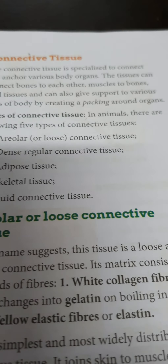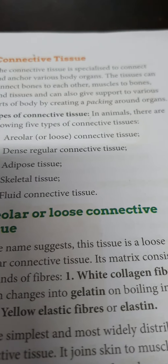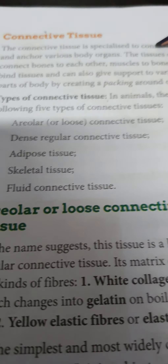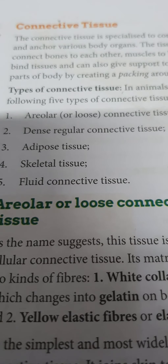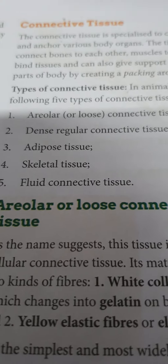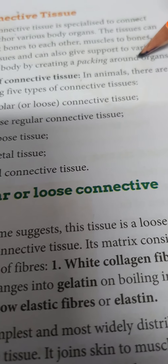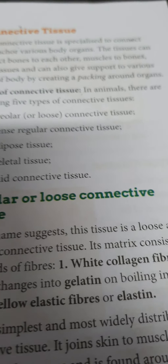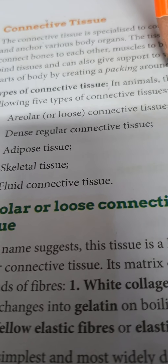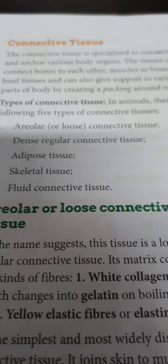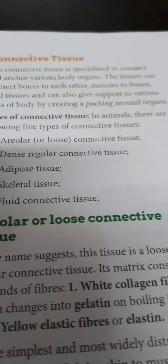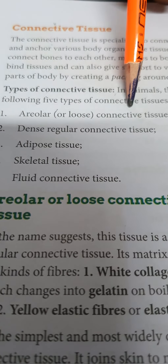Connective tissue works like packing material — just as you pack things neatly when going on holiday. So connective tissue is specialized to: connect (join bones and muscles), anchor (bind tissues and hold body parts), and support by creating packing around organs. In animals and the human body, there are three to five types of connective tissue.